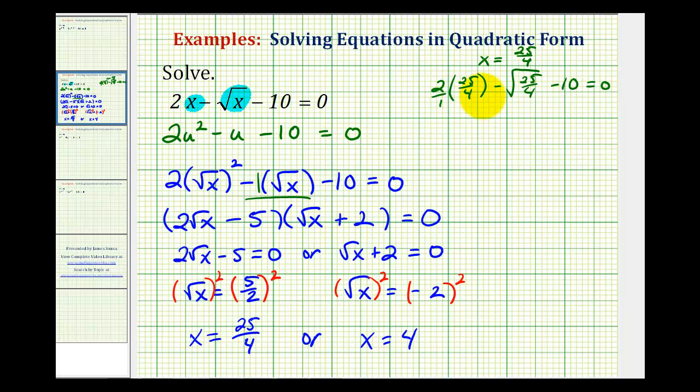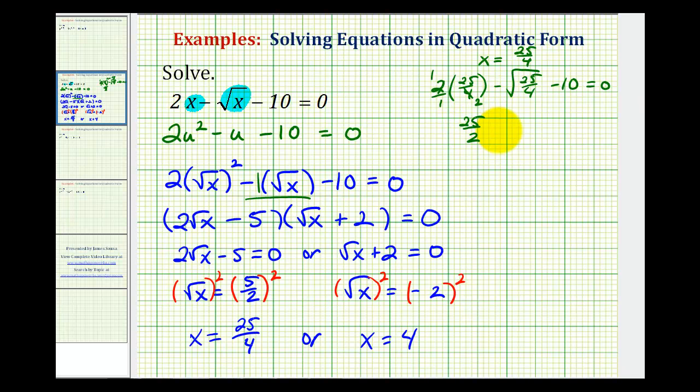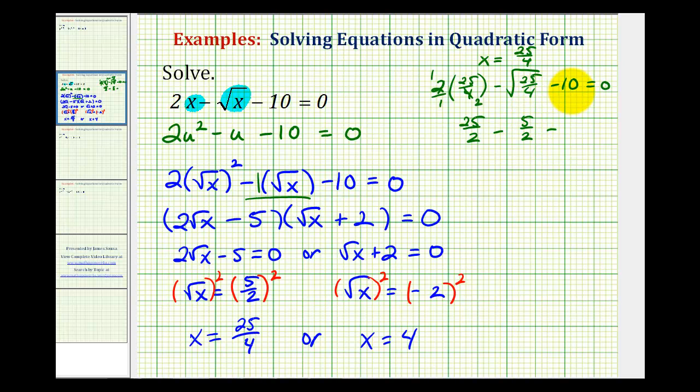Well here we have a factor of 2 that simplifies. This would change to a 1, this changes to a 2. So we have 25/2 minus 5/2, and we can write 10 as 20/2. Here we have a common denominator, and 25 minus 5 is 20, minus 20 is zero. So this solution checks.